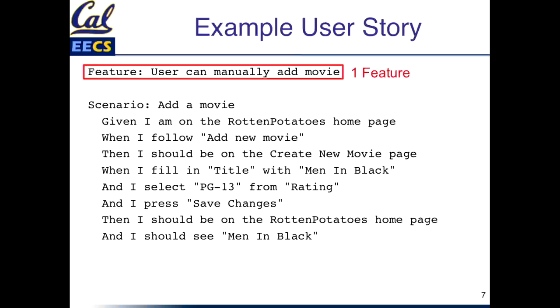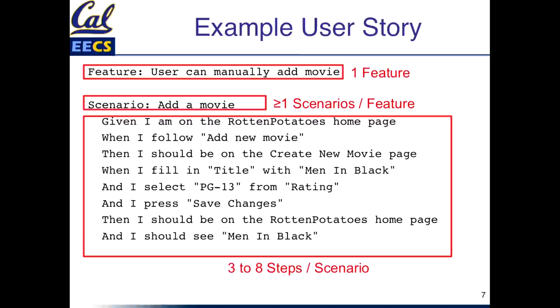This is what a user story looks like in Cucumber. The first thing is called a feature — this is basically what a user story is, for example 'a user can manually add a movie.' You then have one or more scenarios for each of these features. The steps are written in stylized English: given I am on the Rotten Potatoes homepage, when I follow 'add a new movie,' then I should be on a Create New Movie page. When I fill in the title with Men in Black, select PG-13 from Rating, and press Save Changes, then I should be on the Rotten Potatoes page and see Men in Black. So we have a feature which is a user story, multiple scenarios per feature, and steps per scenario.